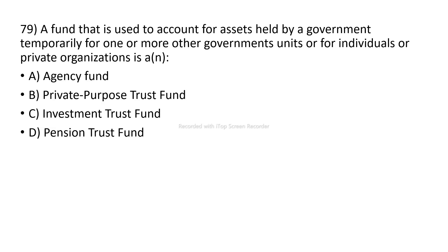Next question: the fund type used to account for assets held by the government temporarily for one or more other governmental units, individuals, or private agencies is the Agency Fund. The choices include private-purpose trust fund, investment trust fund, pension trust fund, and agency fund — the correct answer is Agency Fund.